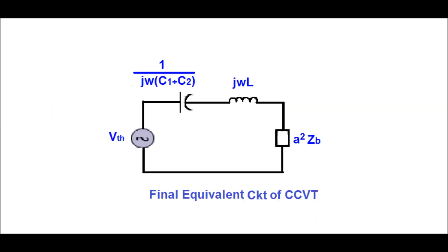The final equivalent circuit of CCVT referred to the primary side has been shown in this figure. Here ωL = 1/(ω(C1+C2)). The voltage drop across C is neutralized, and the relay sees the actual voltage to be measured.